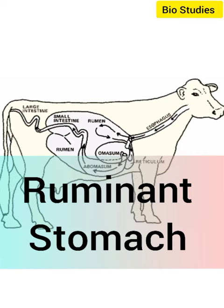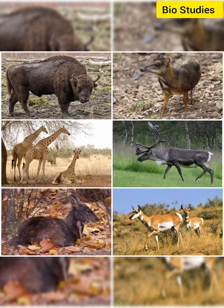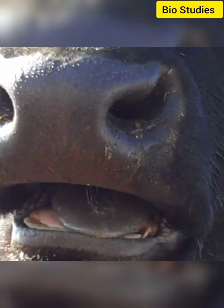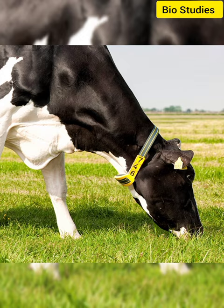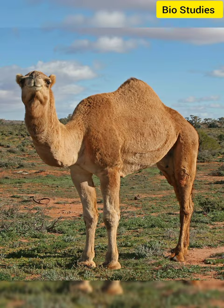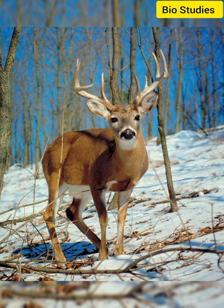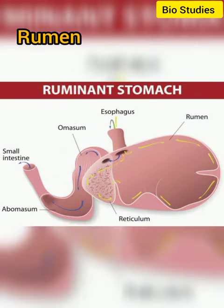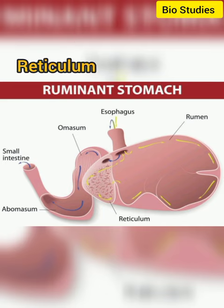Welcome to Bio Studies. Let's talk about the ruminant stomach. Ruminant animals are mammals that chew the cud, such as cow, sheep, goat, camel, and deer. The ruminant stomach consists of four distinct chambers. The names of the chambers are rumen, reticulum, omasum, and abomasum.